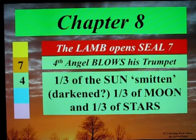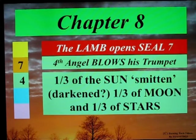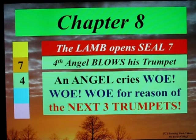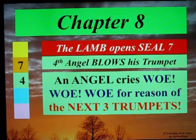The fourth angel blows his trumpet, and a third of the sun is smitten, a third of the moon, and a third of the stars. An angel cries out, 'Woe, woe, woe,' for reason of the next three trumpets — as if those first four were not bad enough.